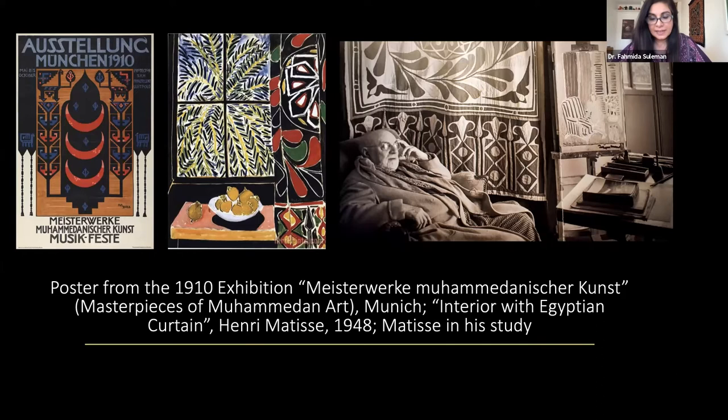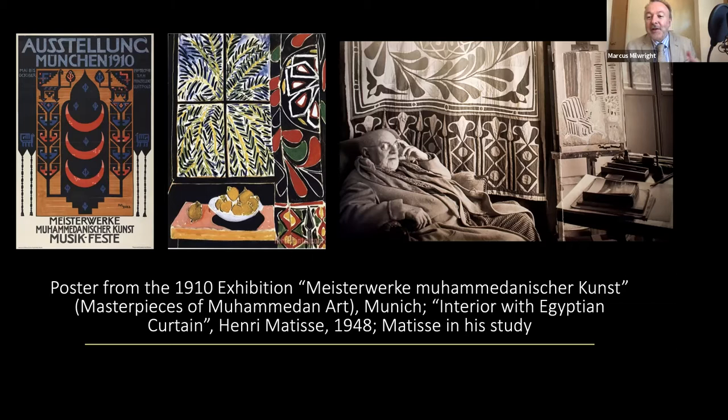Matisse traveled to Morocco in 1912 and 1913 and started collecting textiles and artifacts for his studio. His work Interior with Egyptian Curtain demonstrates his desire to move away from Western European styles of fully rendered forms and perspectives — he used the Egyptian curtain he collected directly for that painting. So Matisse essentially used Islamic craft and elevated it to fine art. As Marcus noted, Matisse would later do cutouts that adopt the same technique as appliqué, and these objects became mediated through artists like Matisse rather than being seen in their own right.